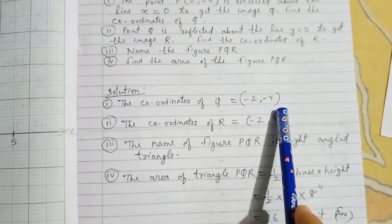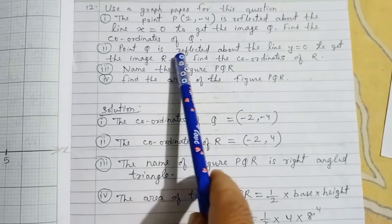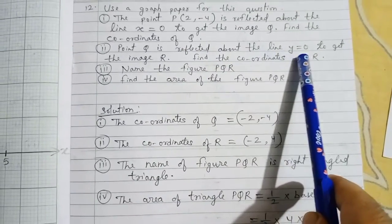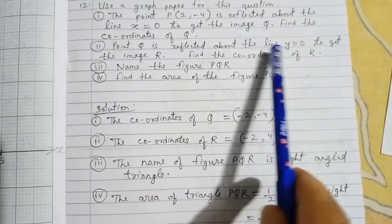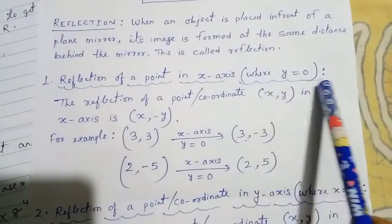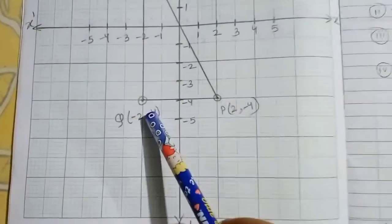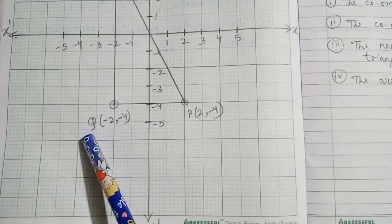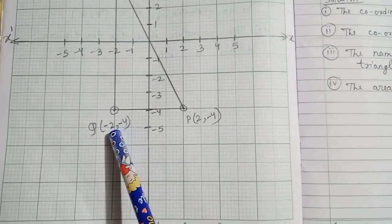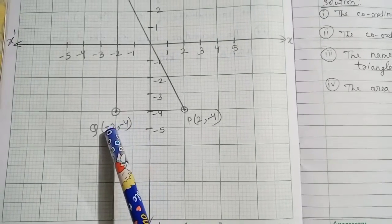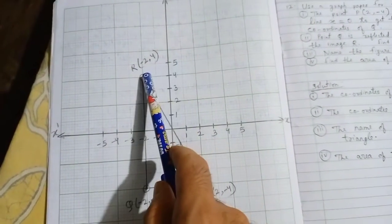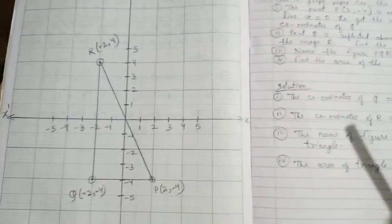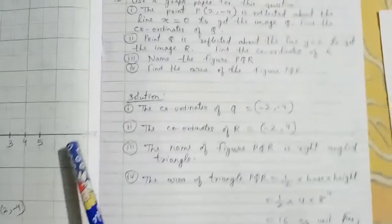Next, Q is reflected about the line y=0 to get image R. y=0 means the x-axis. When reflecting in the x-axis, the second (y) value changes. So Q(-2,-4) reflected gives R(-2,4). Plot R: minus 2 on x-axis and 4 on y-axis. The coordinates of R are (-2,4).